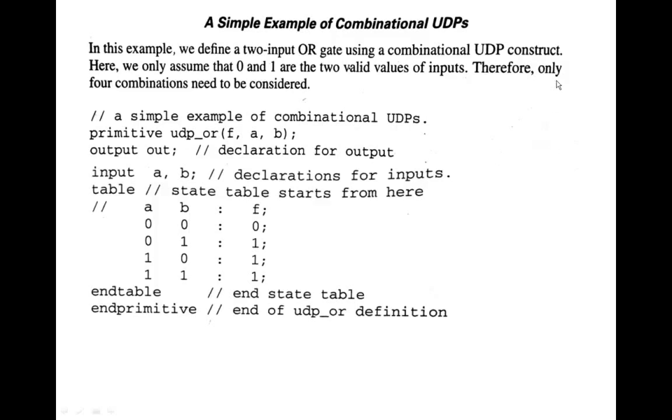So, as been stated in the basic concepts of UDP in an earlier lecture, UDP begins with a primitive. See, this is the primitive UDP underscore OR, this is user defined name. UDP underscore OR is a user defined UDP name.